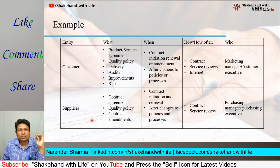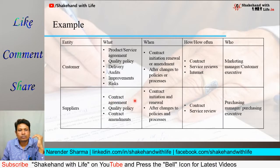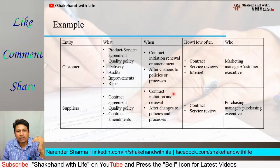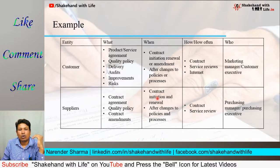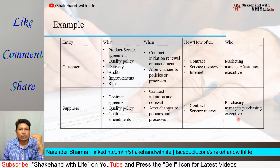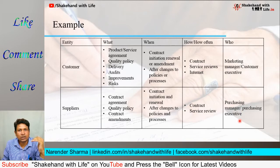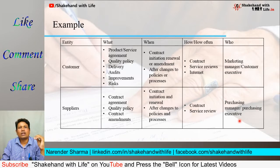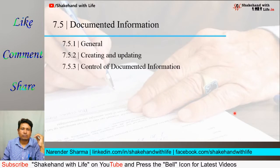In the case of suppliers, what needs to be communicated by the organization: contract agreement, quality policy, and contract amendments. When it will be communicated: at contract initiation, renewal time, or after changes to policies and processes. How: through contract or service reviews. Who will communicate to the supplier on behalf of the organization: the purchasing manager or the purchasing executive.